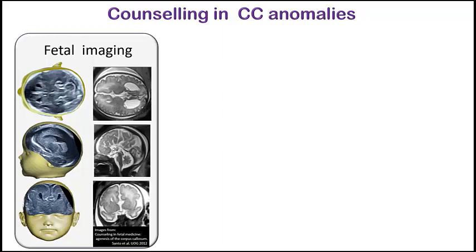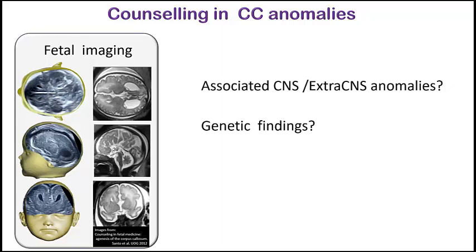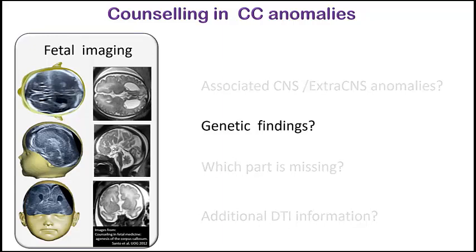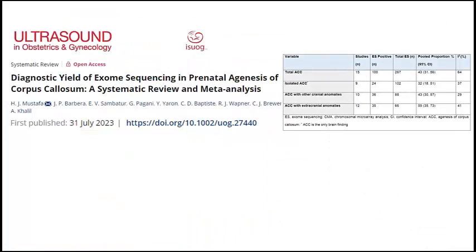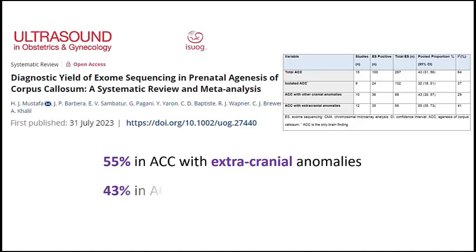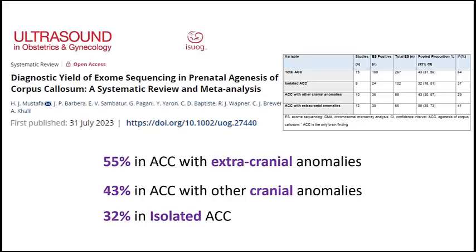Counseling in corpus callosum anomalies is very challenging, and it should not only be based on the ultrasound findings but also on the presence of any associated anomaly that will determine the final prognosis. Genetics plays a very important role, as there are more than 200 genetic syndromes associated with corpus callosum anomalies. In the near future, we will move from array to exome sequencing because of its high diagnostic yield in corpus callosum agenesis, which can be as high as 32% of apparently isolated cases.